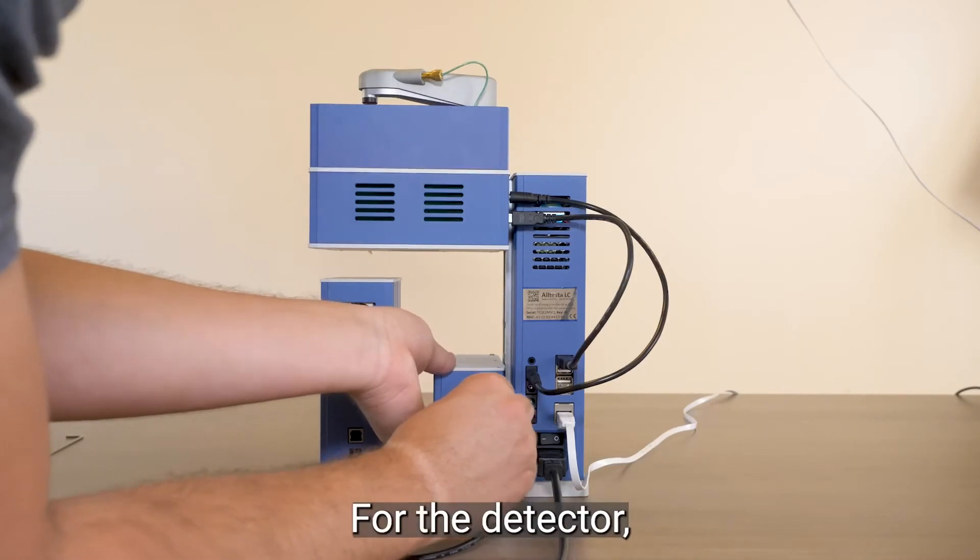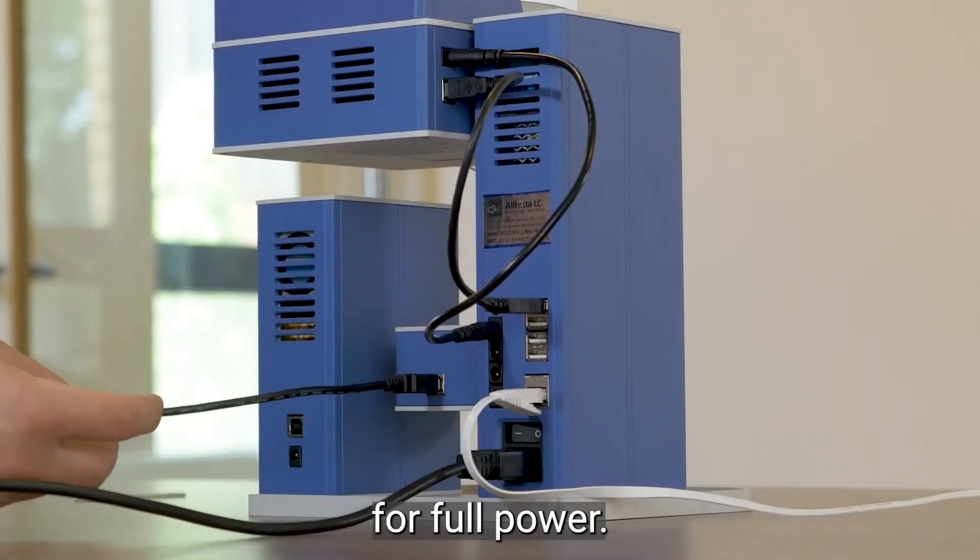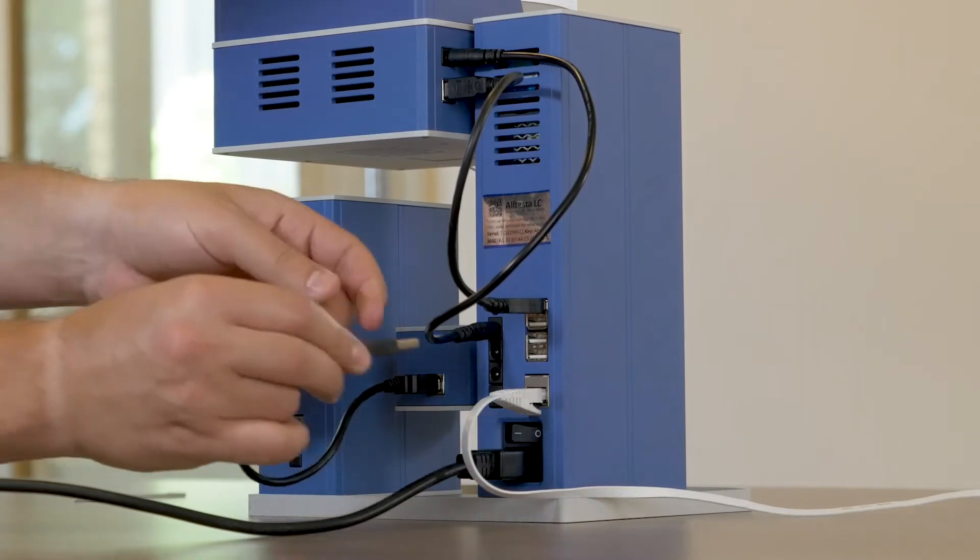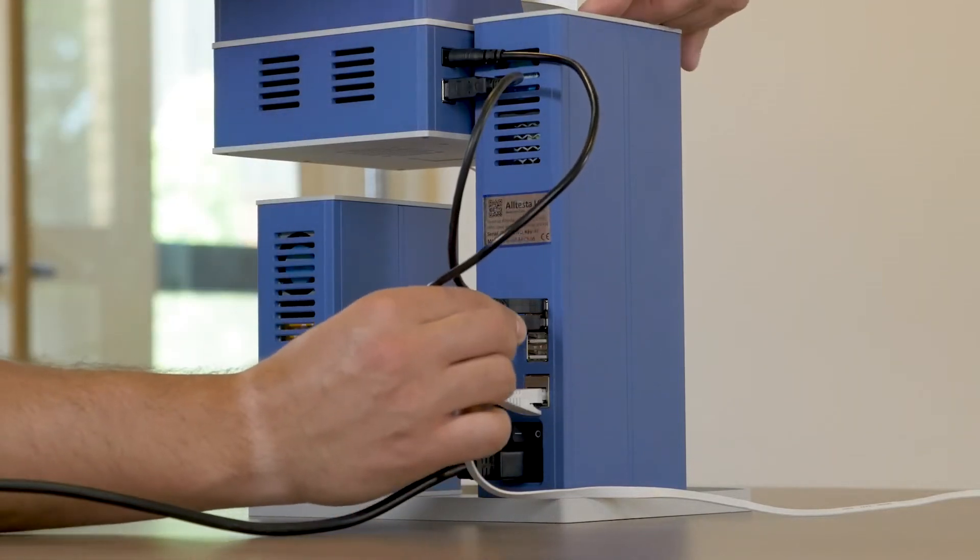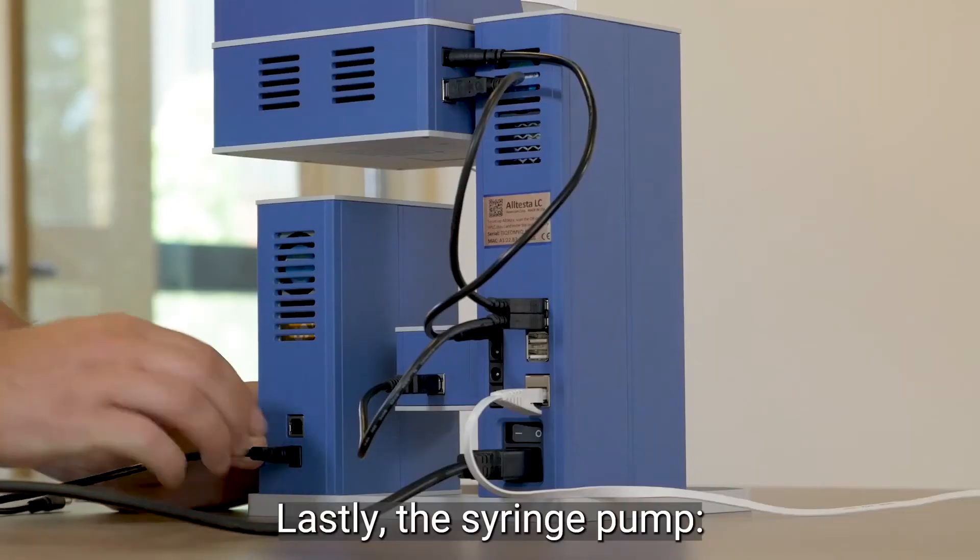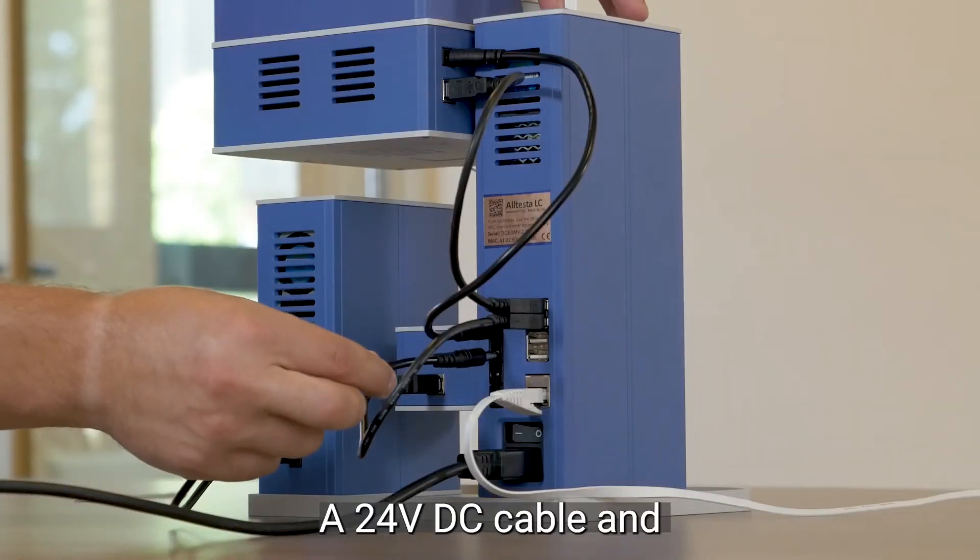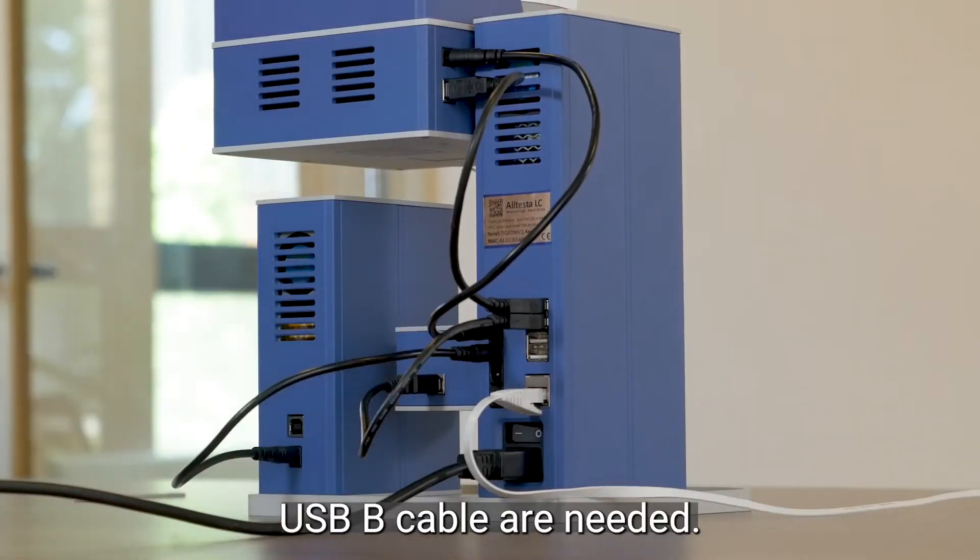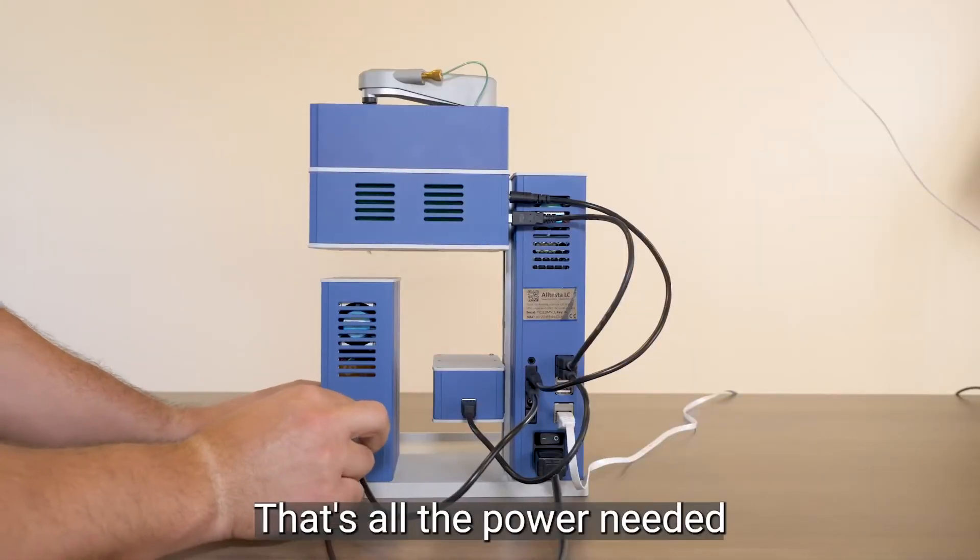For the detector, only a USB-B cable is needed for full power. Lastly, the syringe pump. A 24 volt DC cable and USB-B cable are needed. That's all the power needed.